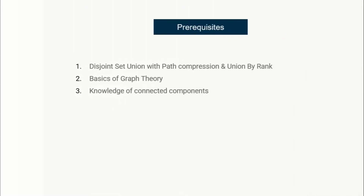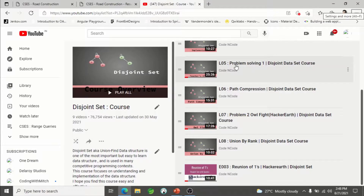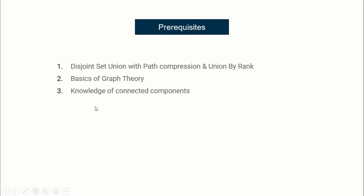Now, the prerequisites: since I'm going to solve this problem using Disjoint Sets, you need to have knowledge of the Disjoint Set Union (DSU) data structure. I already have a course on that, so you can go ahead and learn DSU if you have no idea about it - including path compression and union by rank optimization techniques. I'll put the link in the description. Knowledge of basic graph theory and connected components is also required.